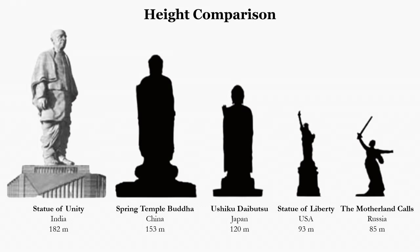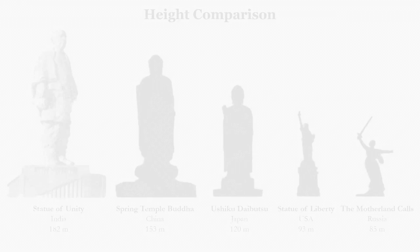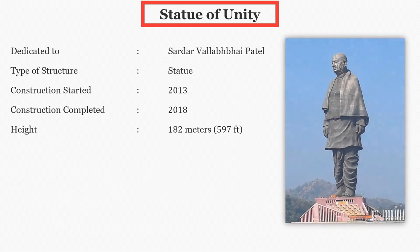Sardar Patel was highly respected for his leadership in uniting 562 princely states of India with a major part of the former British Raj to form a single Union of India. That is why his statue was given the name Statue of Unity.